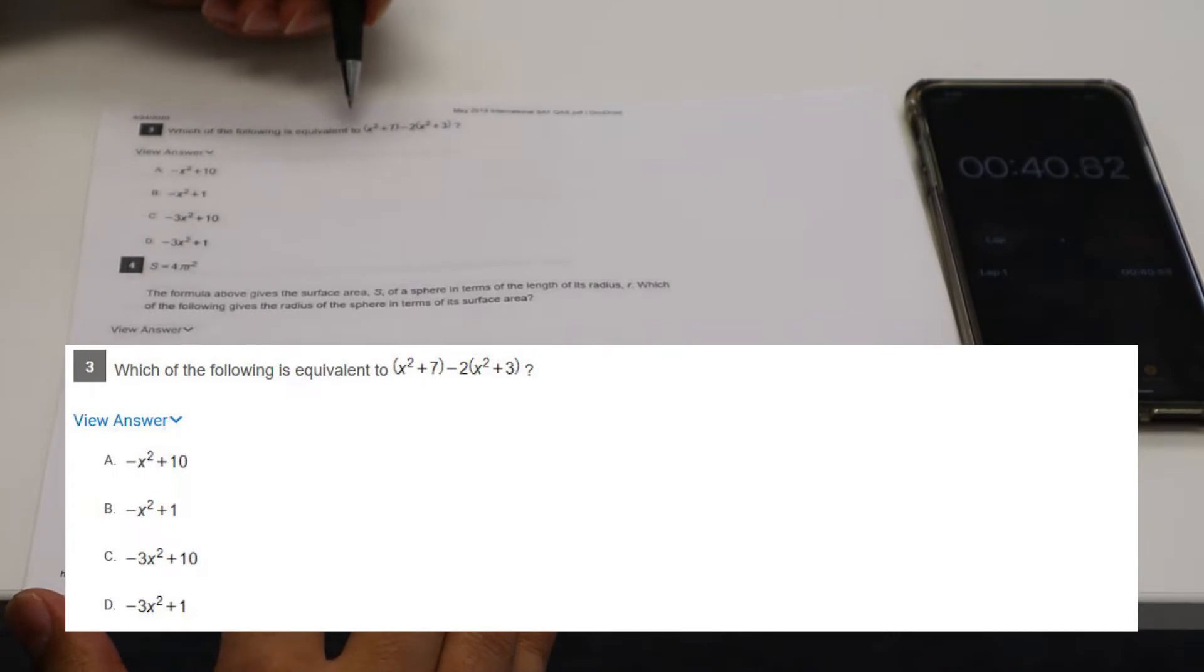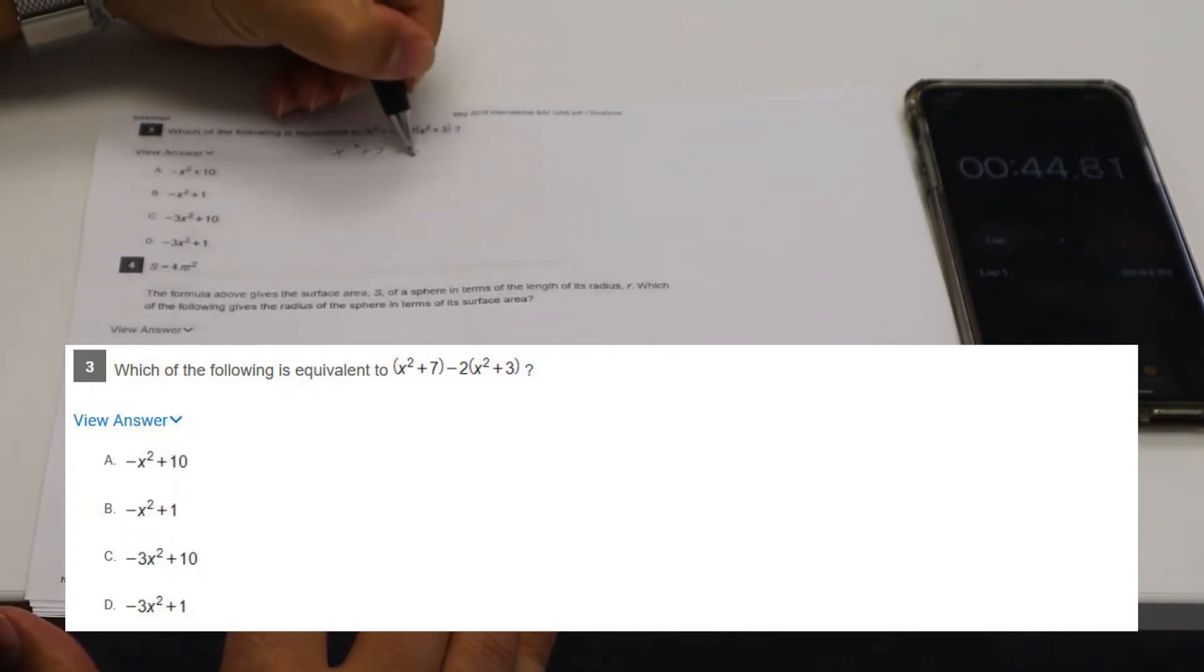Let's see. What's the equivalent to that? So X squared plus seven minus two X squared minus six. So that would be negative X squared plus one.